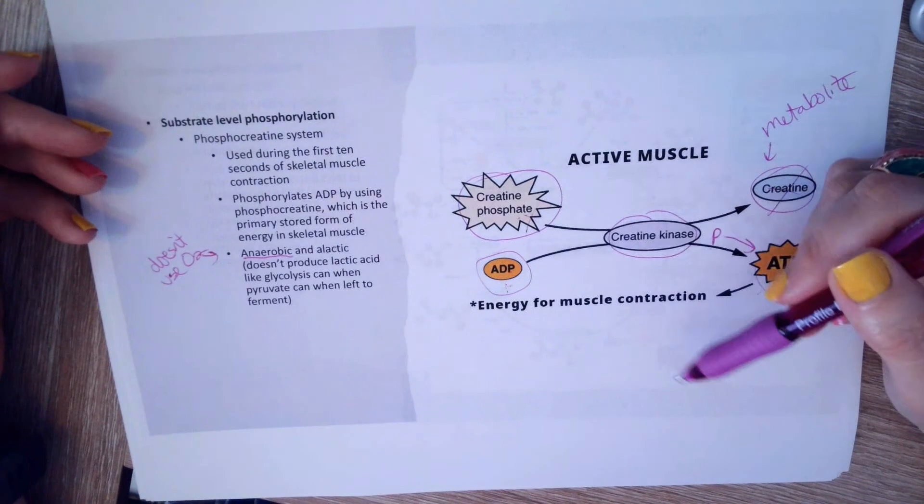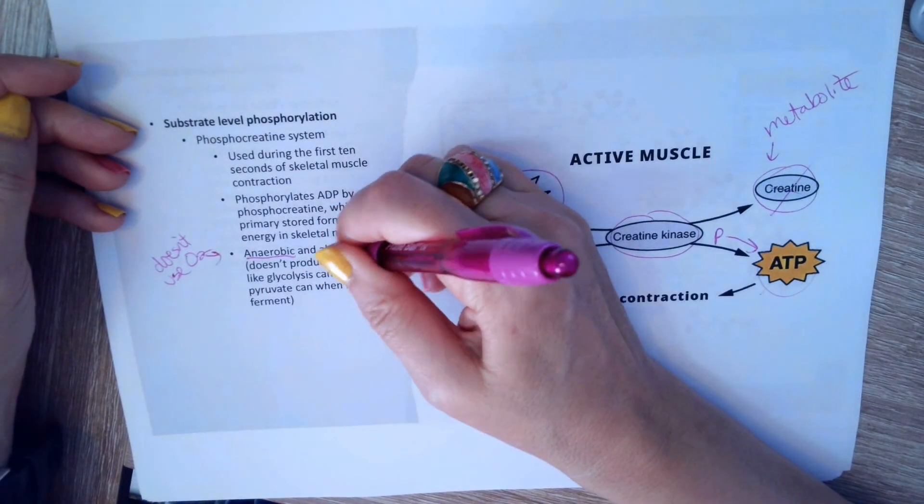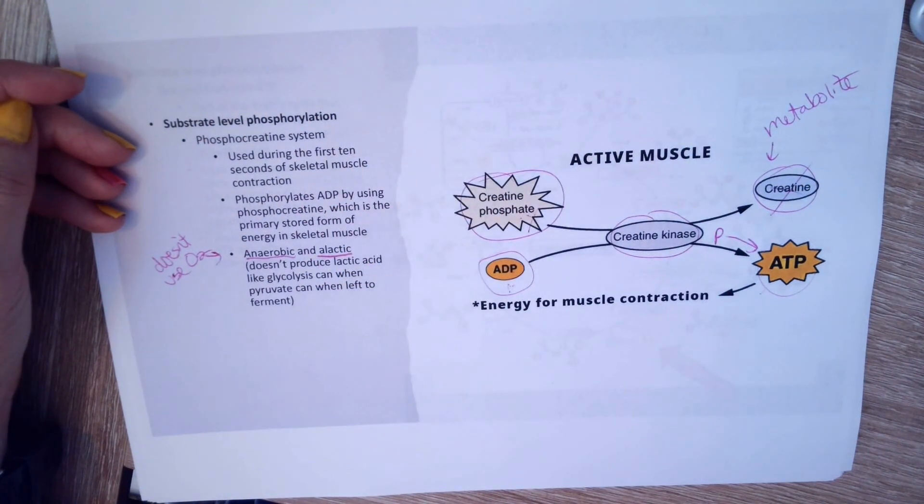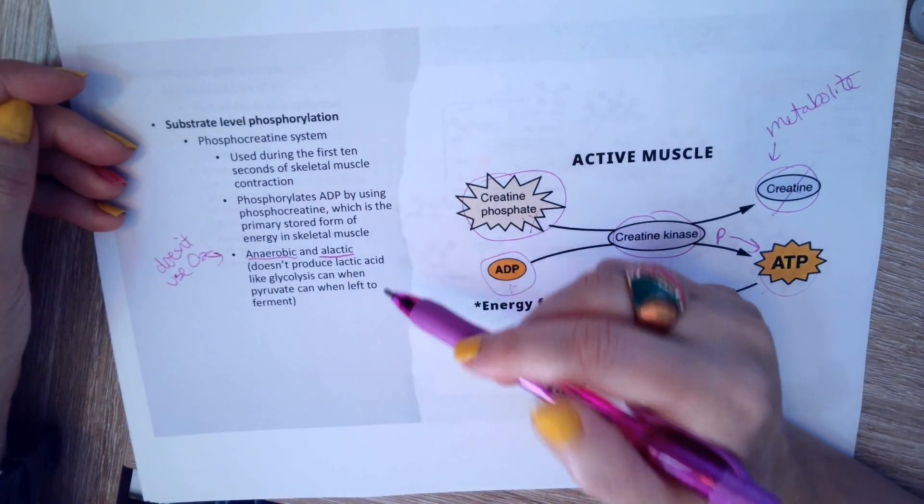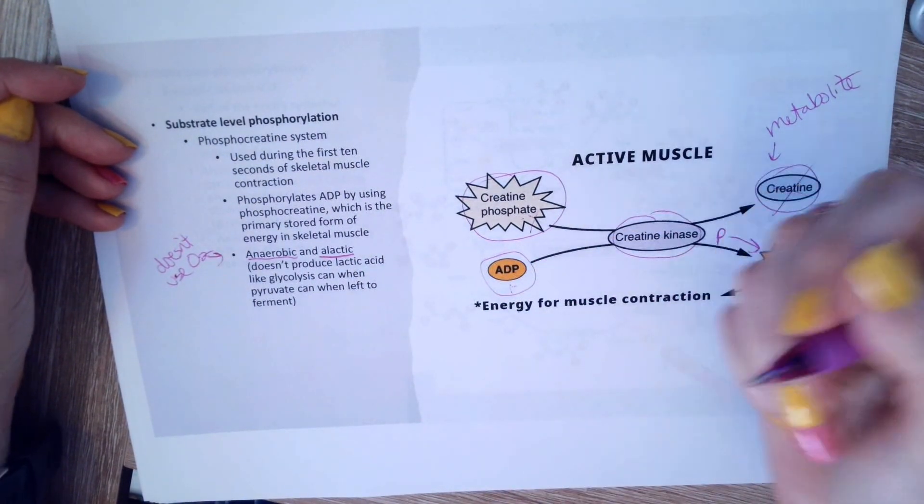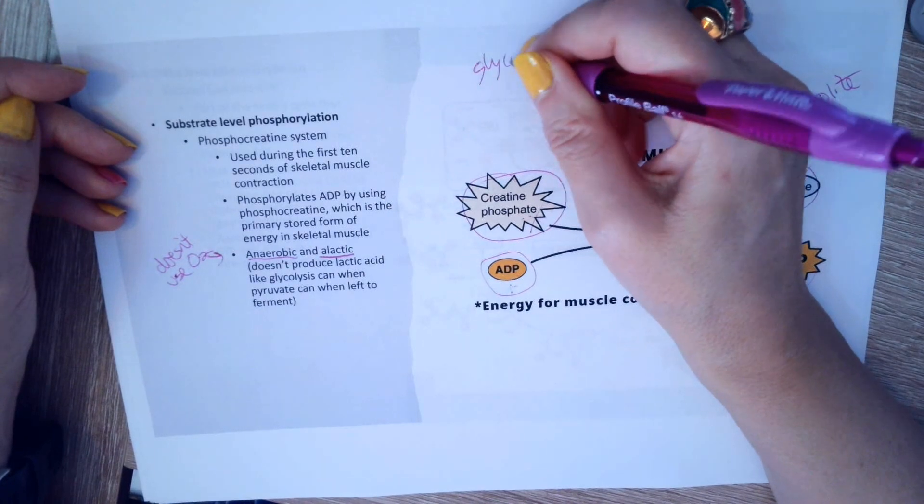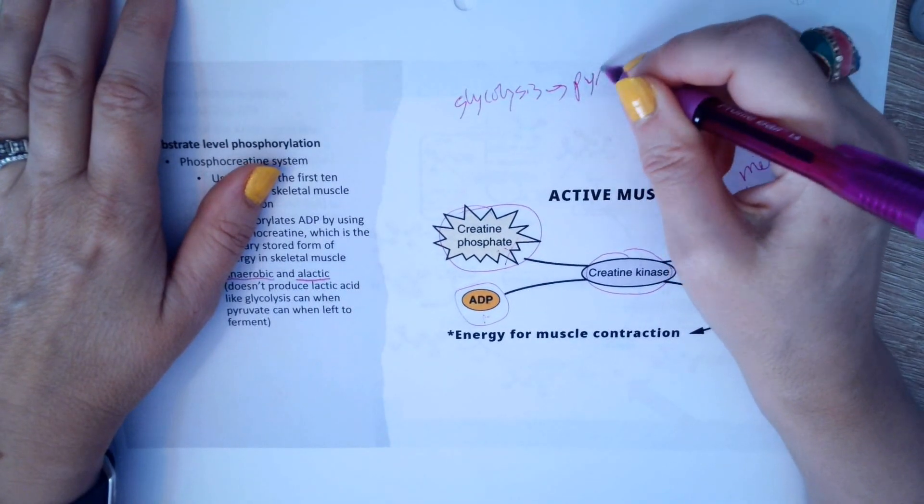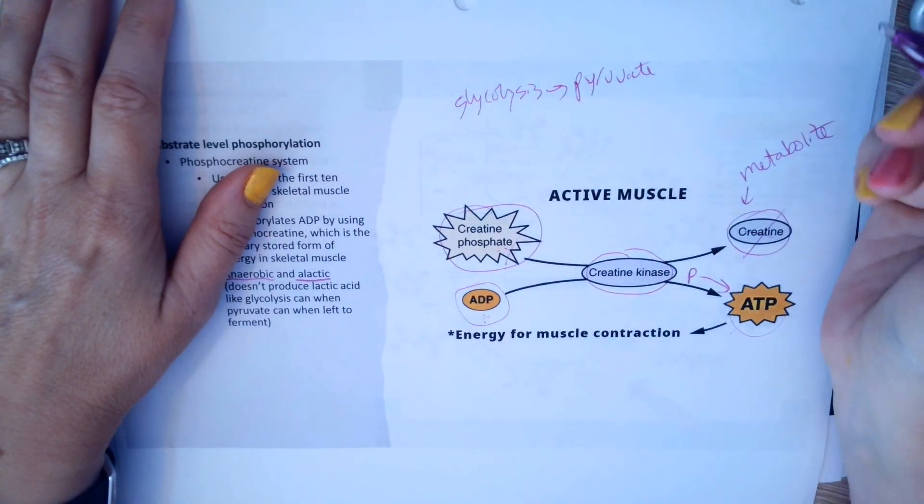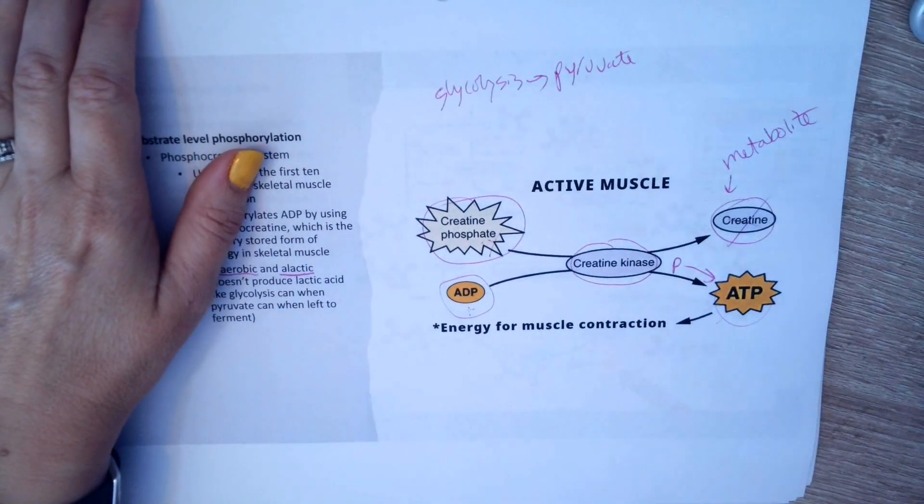It's also alactic, funny sounding word. But what the word alactic means is it doesn't make lactic acid. Remember when we had glycolysis and we get pyruvate, but if we don't have oxygen present, we can't run that.